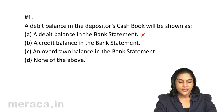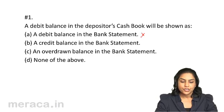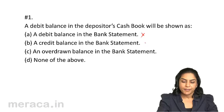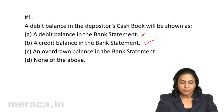Option B: a credit balance in the bank statement. A debit balance in the depositor's cash book should be a credit balance in the bank statement. Option C: a debit balance in the depositor's cash book — is it an overdrawn balance in the bank statement?